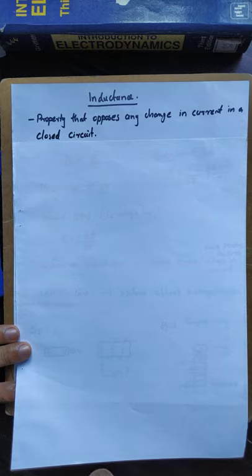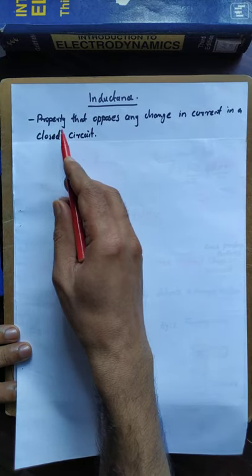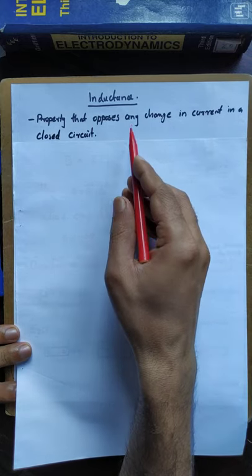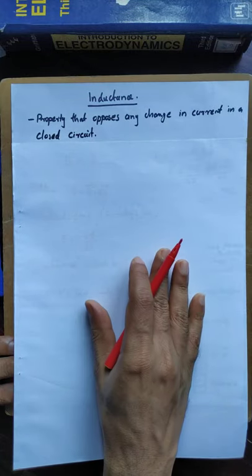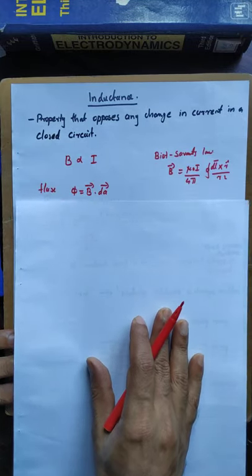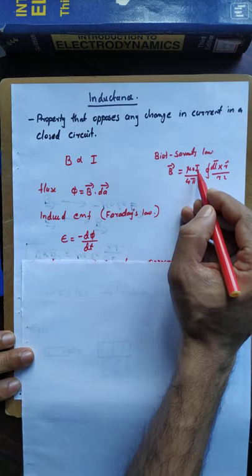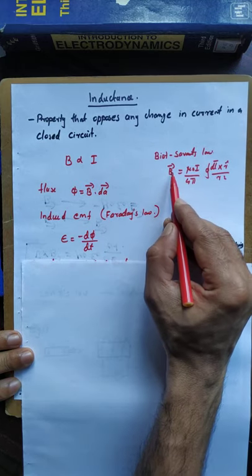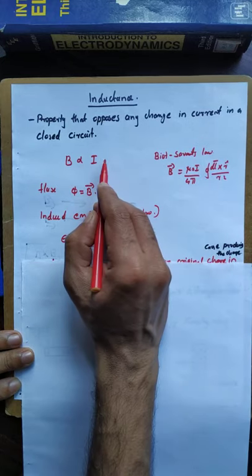Let us discuss one of the practical properties of Faraday's law, that is inductance. Inductance is the property that opposes any change in current in a closed circuit. From Biot-Savart law, B is equal to mu-zero i by 4 pi, close integral DL cross r-cap by r-square. So we can see that the magnetic field B is proportional to current.